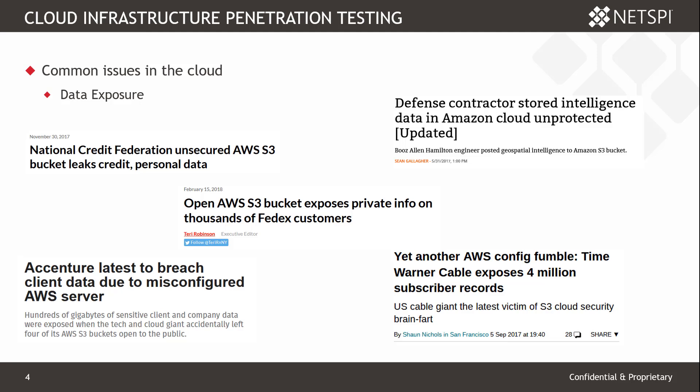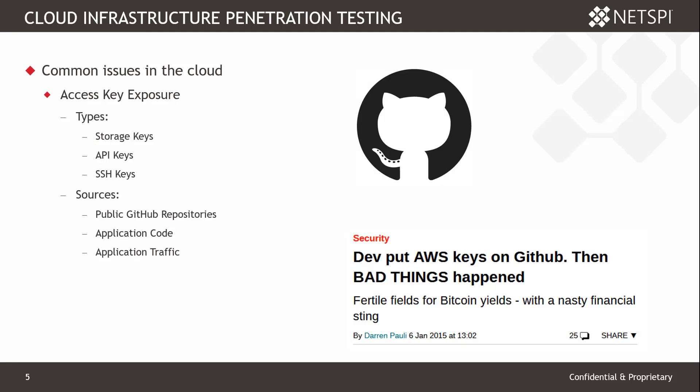AWS is not the only cloud provider vulnerable to this. Azure has its own version of public or unstructured data storage, and likewise with Google Cloud. Most other cloud providers allow that as well. With any of these cloud providers, you can end up putting sensitive data into a data store and accidentally exposing it to the internet. This is one of the more common issues we see as pen testers, and it ends up in the headlines frequently because it's so impactful.